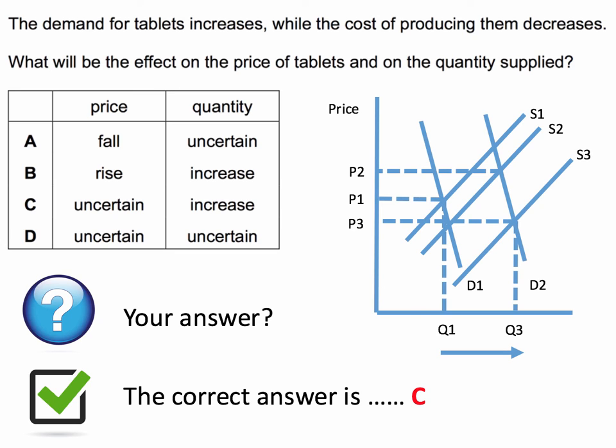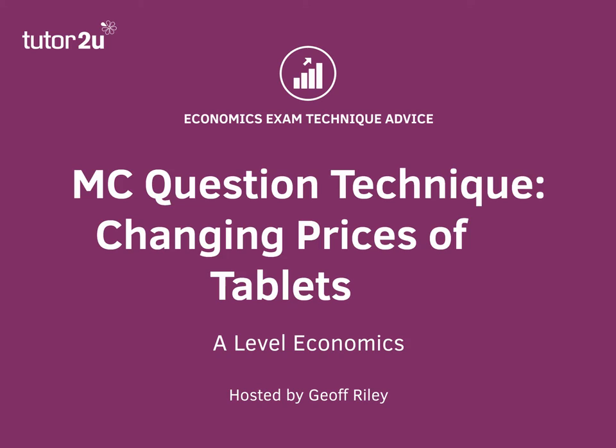So the price change is uncertain, but these are two factors that both increase the quantity supplied of tablets into the marketplace. Hence the answer is C to this question.